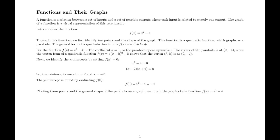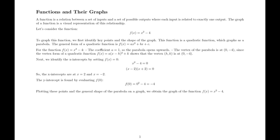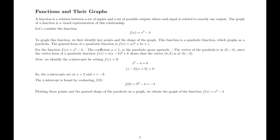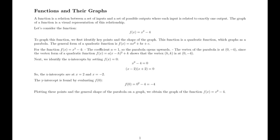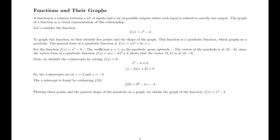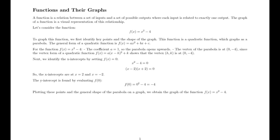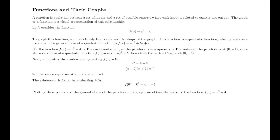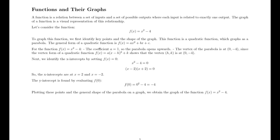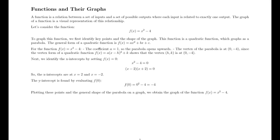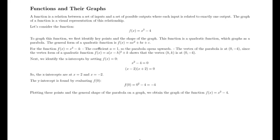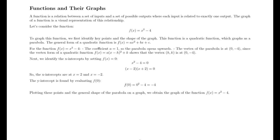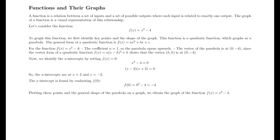Next, we identify the x-intercepts by setting f(x) equal to 0. This gives us x² - 4 = 0, which factors to (x - 2)(x + 2) = 0. So the x-intercepts are at x = 2 and x = -2. The y-intercept is found by evaluating f(0), which gives us f(0) = 0² - 4, or -4.